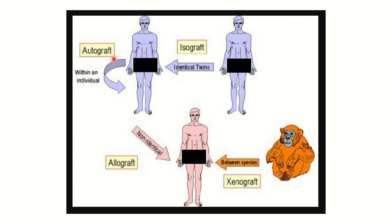Autograft means tissue from a person's own body transplanted into another part of their body. Allograft means all three individuals are the same species — human — but when a graft is taken from one person and transplanted into a genetically non-identical person, it is called an allograft. Same species but not genetically identical equals allograft; genetically identical equals isograft.